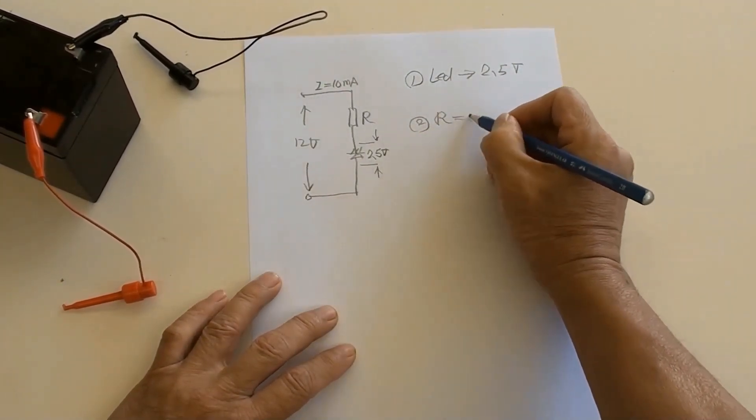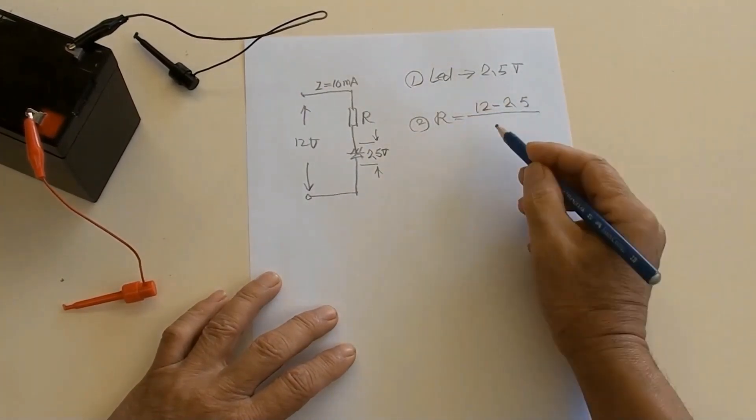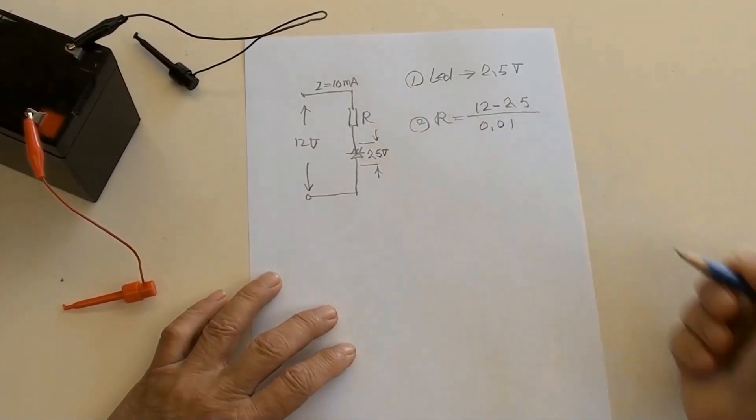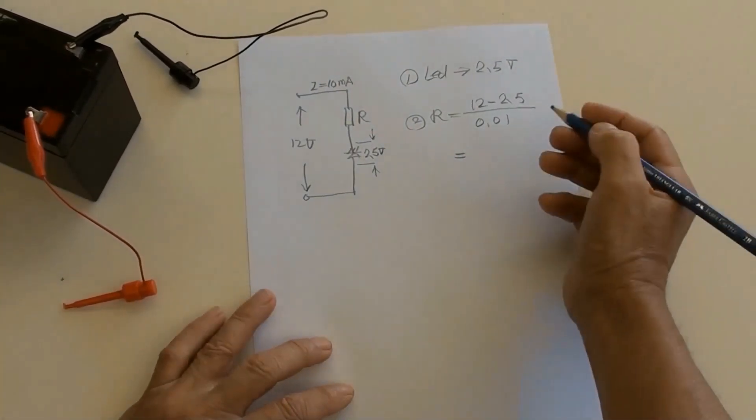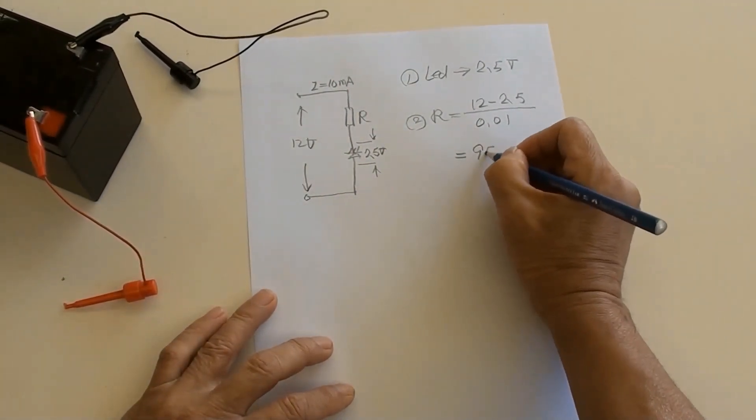Second, resistor equals 12 volt minus 2.5 volt over 10 milliamperes equals 950 ohms.